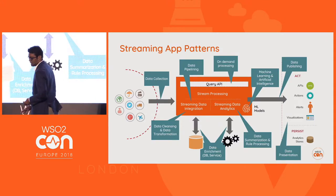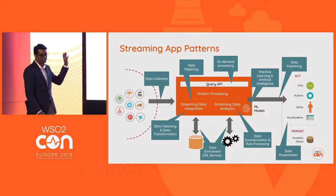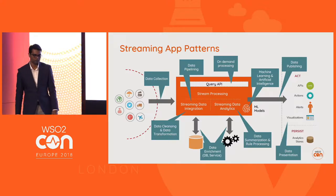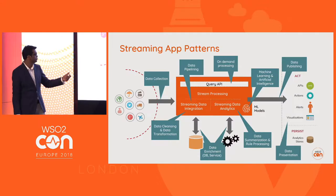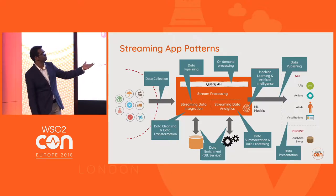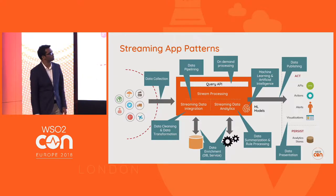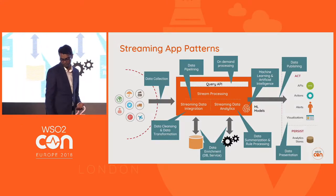If you take the whole stream processing pipeline, you need each of these building blocks to build your whole scenario. Based on your scenario, the items you pick may change, but you can build everything from this: data collection, streaming data integration, data cleansing, transformation, pipelining, data enrichment, streaming summarization, rule processing, machine learning, storing data, presenting and publishing it, and on-demand processing.